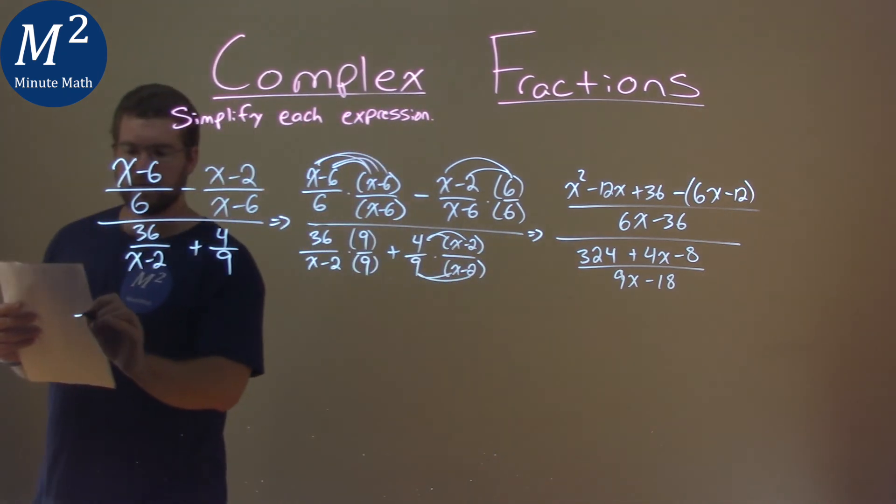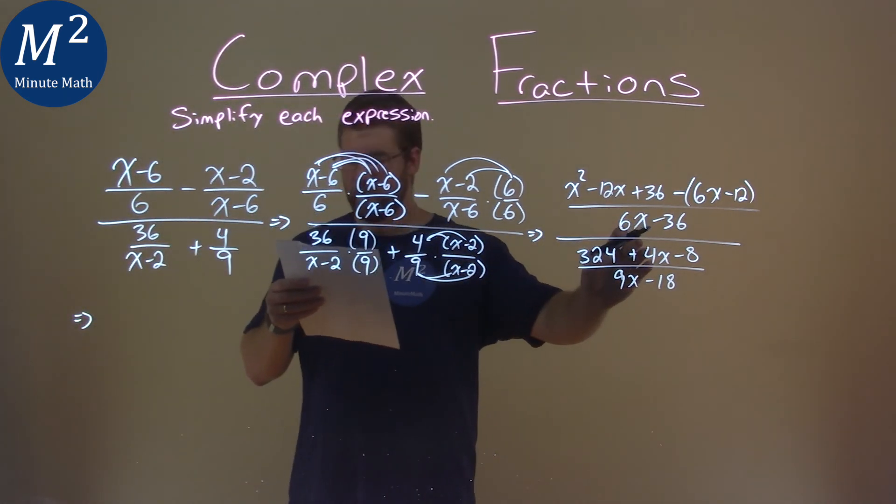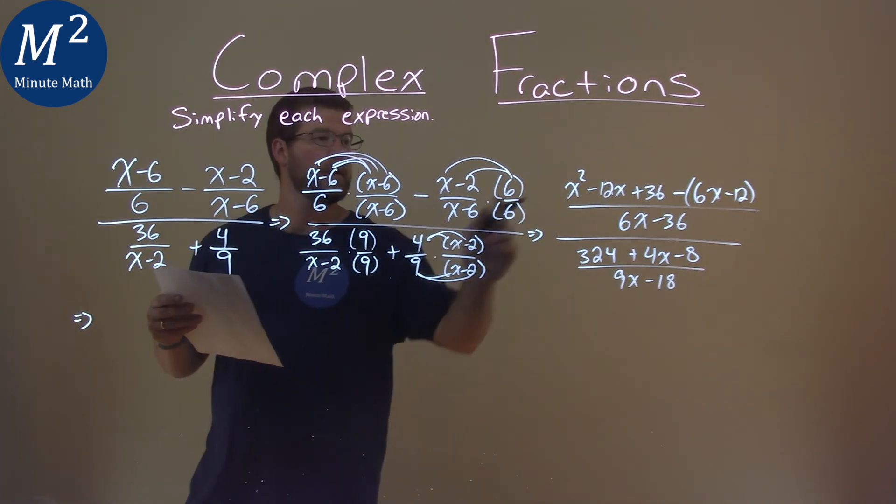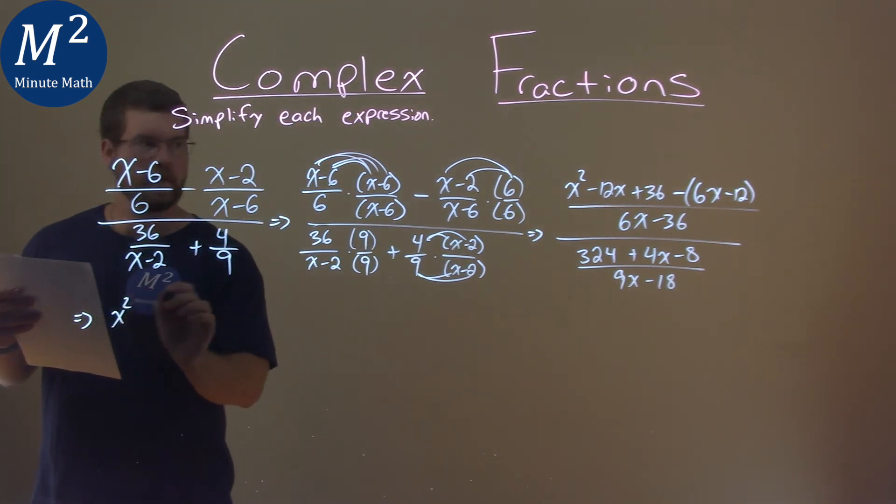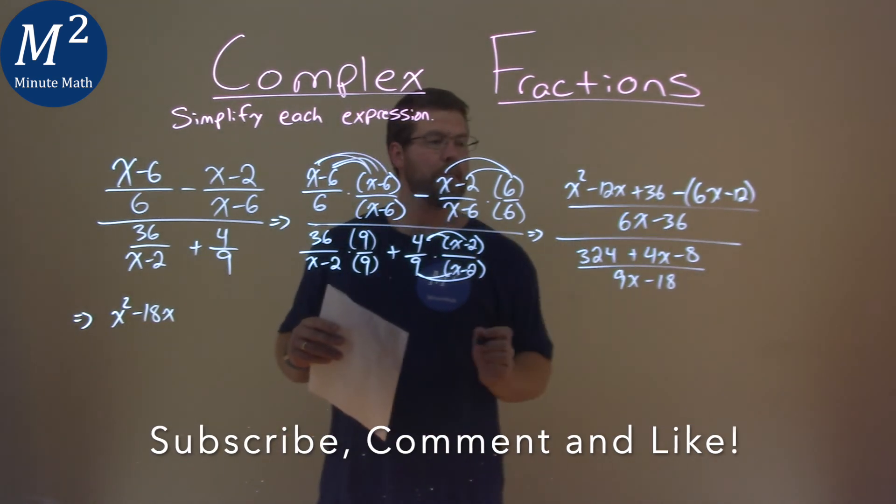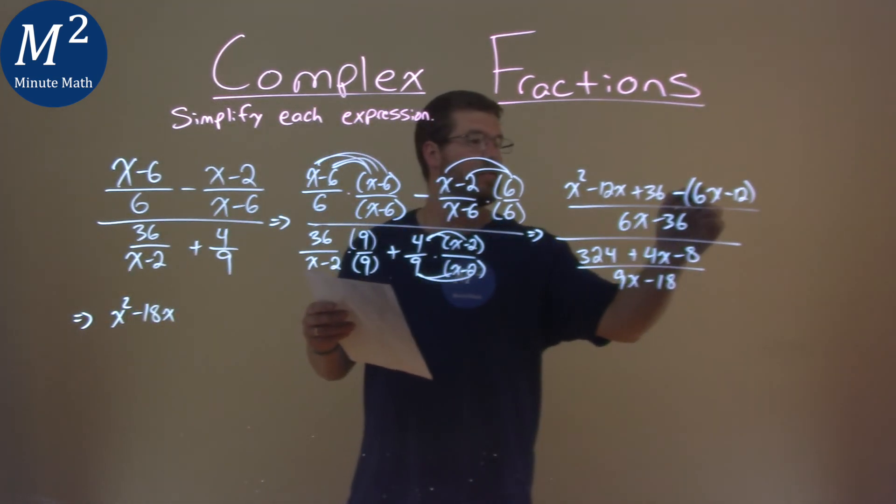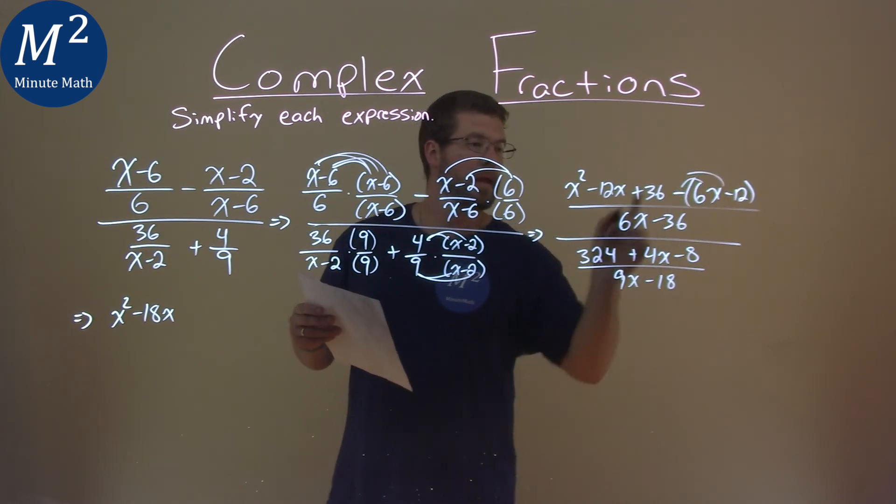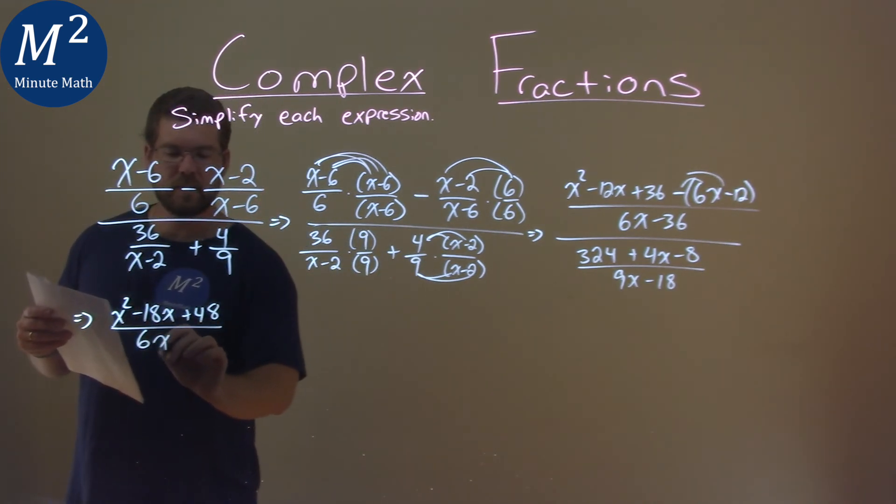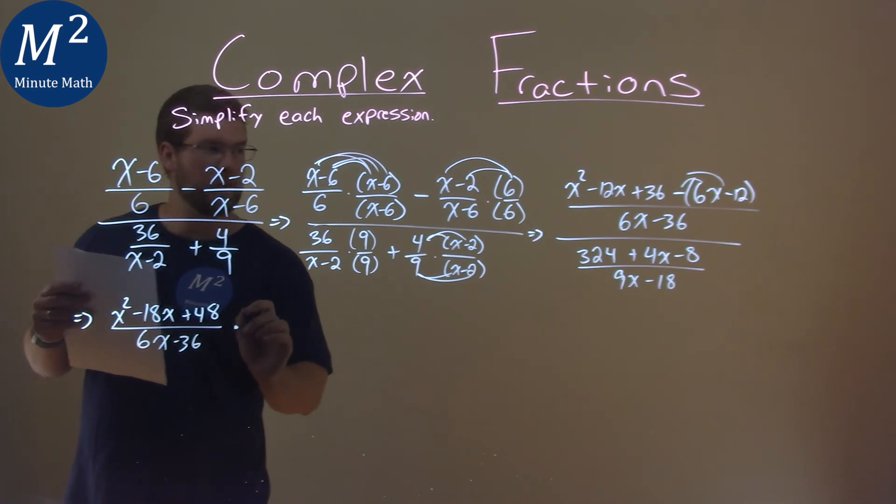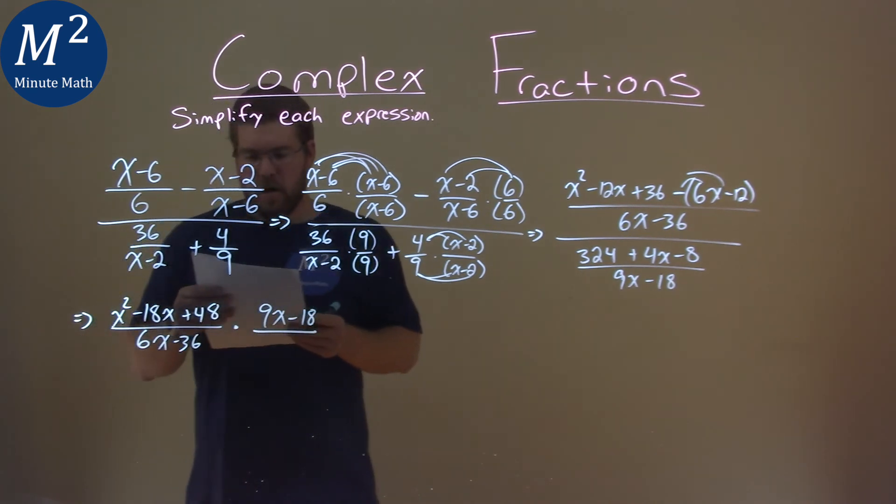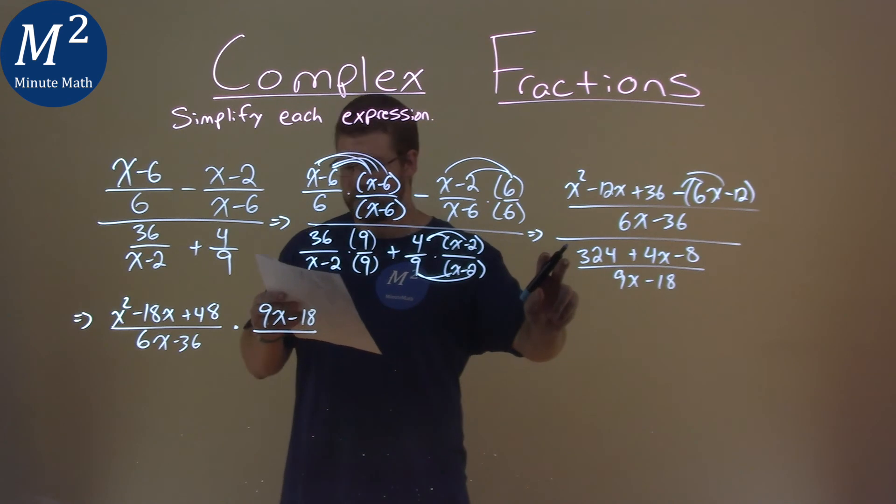Let's go rewrite this over here. But instead of dividing by this big fraction, we can multiply it and flip the denominator. So, in doing so, I'm going to simplify the numerator up here. So, we have x squared, and then minus 12x, and a minus 6x is a minus 18x. And then 36 minus 12, or minus a negative 12 plus a positive, right? We distribute that minus sign as a positive 48. All over the denominator, 6x minus 36. That is now going to be multiplied by this denominator, flipped. So, 9x minus 18, over, let's combine like terms.